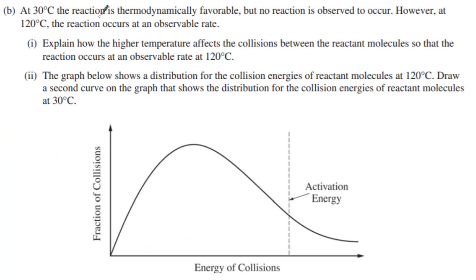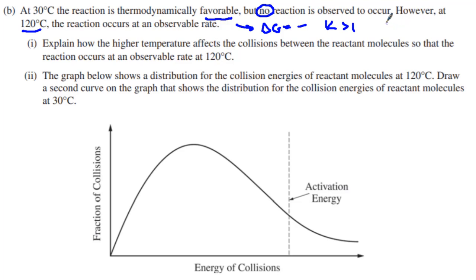It says at 30°C the reaction is thermodynamically favorable. What do I know about thermodynamically favorable? Delta G is negative and K is greater than 1. But no reaction is observed to occur. However, at 120°C the reaction occurs at an observable rate. Why won't it occur even though delta G is negative? The activation energy is too high — and we call that kinetic control. So the reaction is found to be under kinetic control.